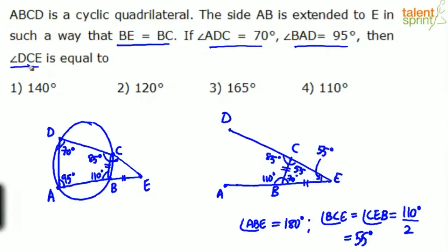What is he asking us to find out in the question? Angle DCE. Now look at this. Angle DCE can be taken as what? Angle DCB plus angle BCE. So 85 degrees plus 55 degrees. That is 140 degrees. 140 degrees, option one would be the correct answer.